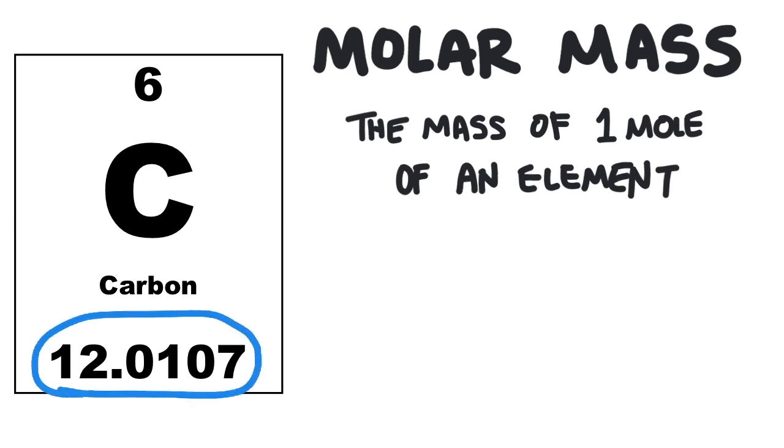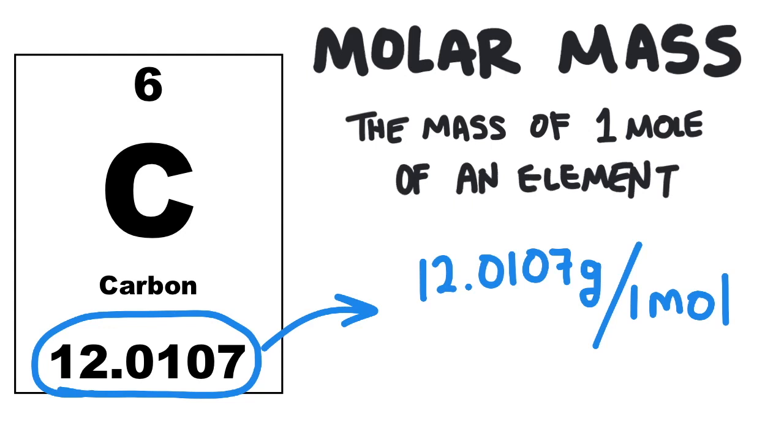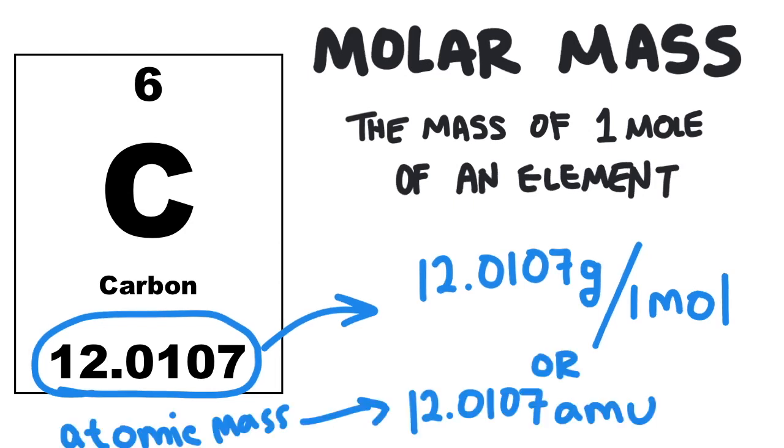The number here is the molar mass. That is the mass in grams of one mole of that element. It's pretty cool. It's like it means two things at the same time. It's the average mass of one single atom in AMU, or it's the mass of a whole mole of atoms in grams.